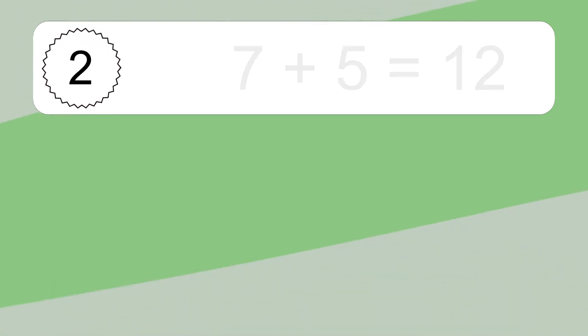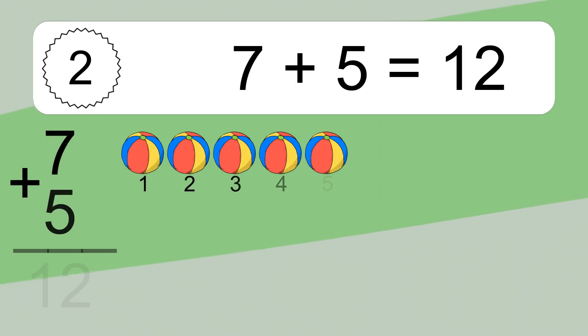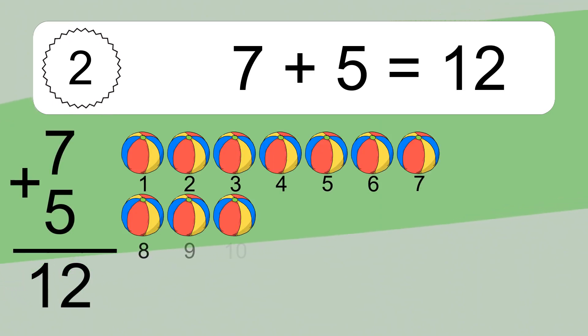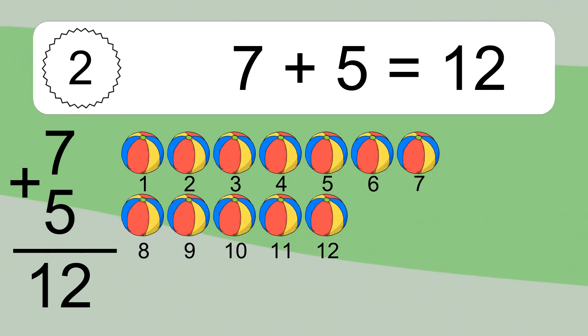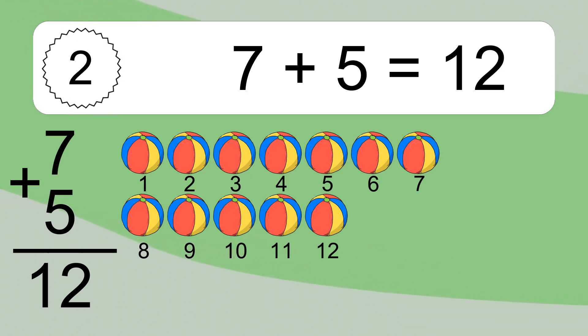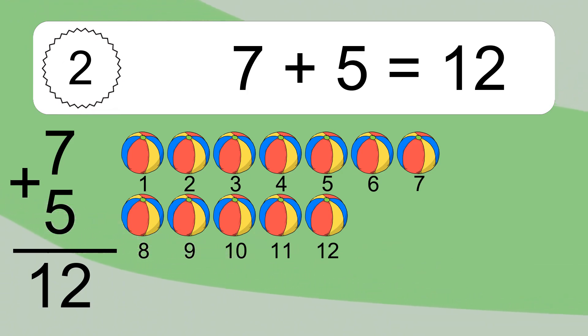7 plus 5 equals what? 7 plus 5 equals 12. Let's count it: 1, 2, 3, 4, 5, 6, 7, 8, 9, 10, 11, 12.